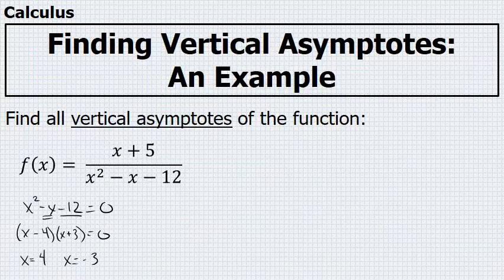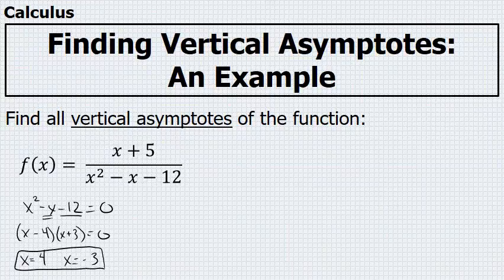It is easy to see that neither of these x values will yield a zero in the numerator, so both of these are vertical asymptotes for this function.